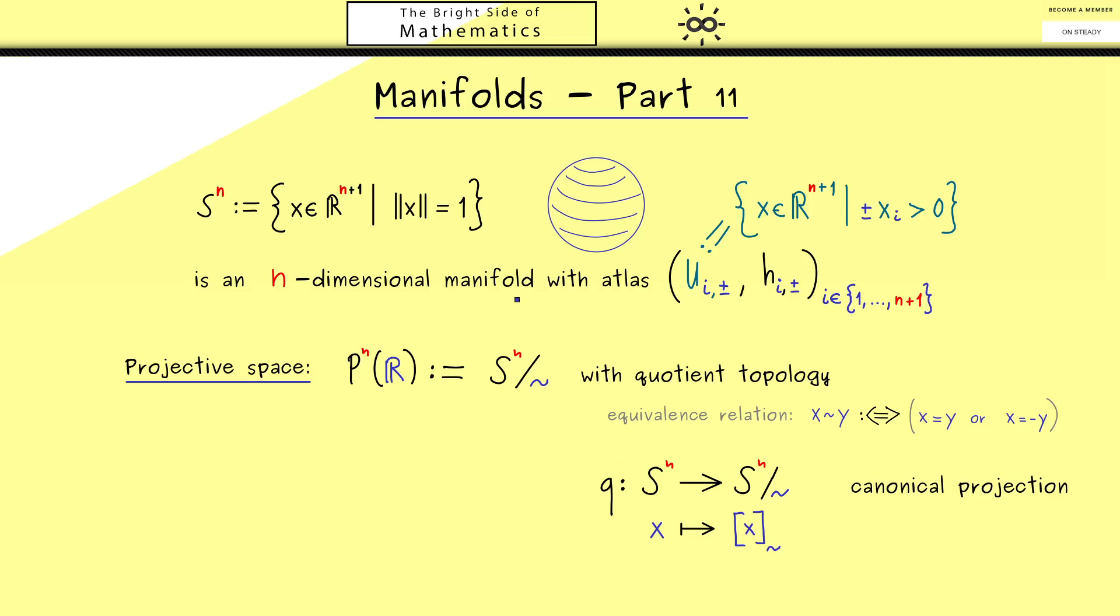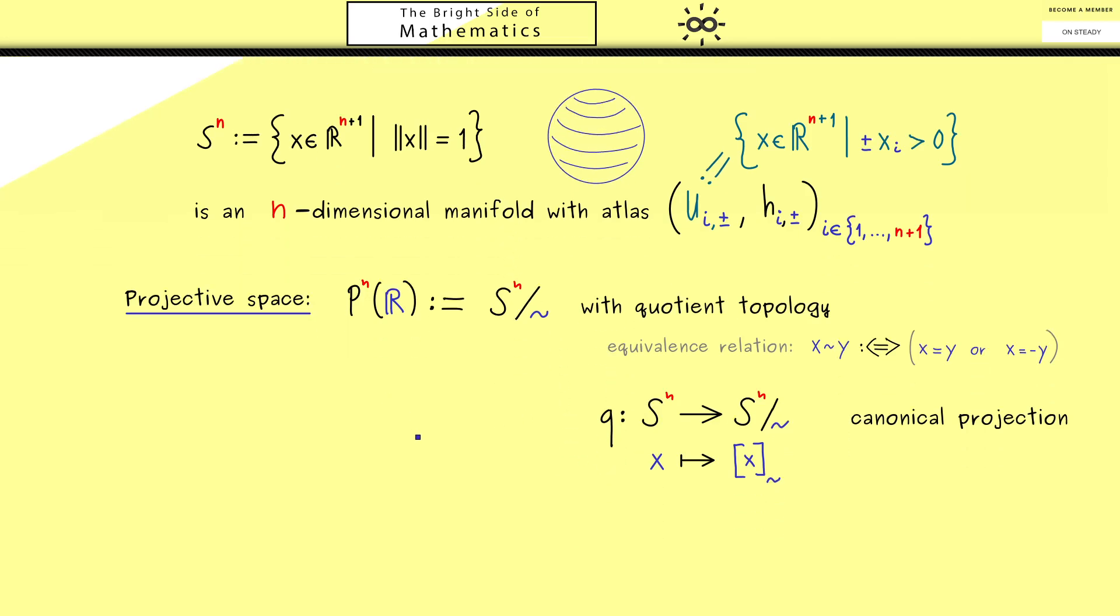And now we are ready to define an atlas for P(R^n). As before for the sphere, we need to cover the whole topological space with open sets. Therefore I want to define the set V_i. This is given as the set of all points in P(R^n), so all equivalence classes, with the property that x_i is not zero. Please note by the definition of the equivalence class, this set is well-defined.